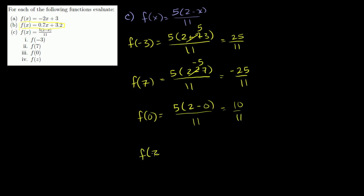f of z. Well, every time we saw an x, we're going to replace it with a z. It's equal to 5 times 2 minus z over 11. And that's our answer. We could distribute the 5. We could say this is the same thing as 10 minus 5z over 11. We could even write it in slope-intercept form. This is the same thing as minus 5 over 11z plus 10 over 11. These are all equivalent, but that is what f of z is equal to.